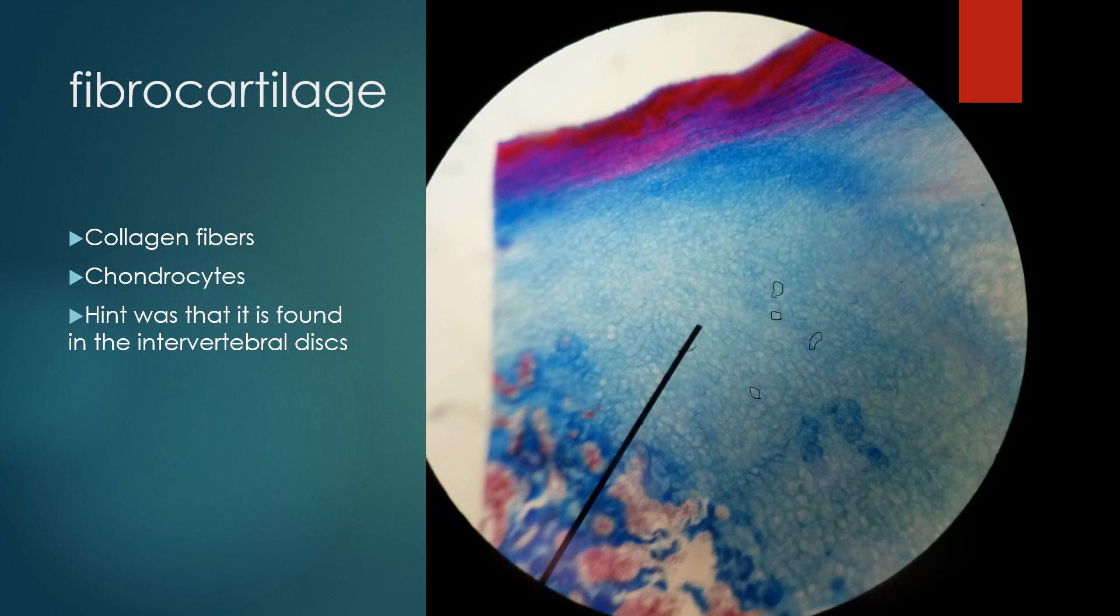With this particular specimen, I didn't really feel like it was a close match to what you were seeing in your textbook. So I gave that hint that this type of cartilage is found in intervertebral discs. If you knew the locations in the body of fibrocartilage, you would have an indication of what you were looking at aside from just the physical characteristics of the tissue.